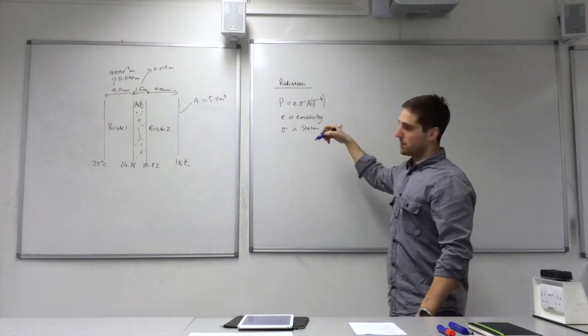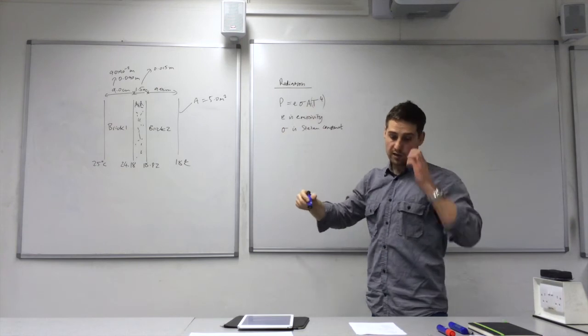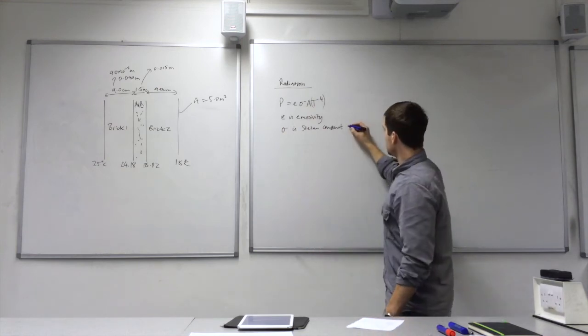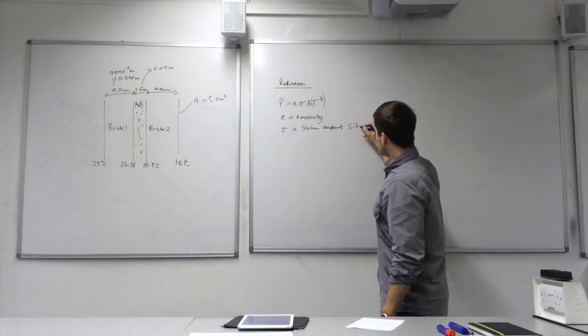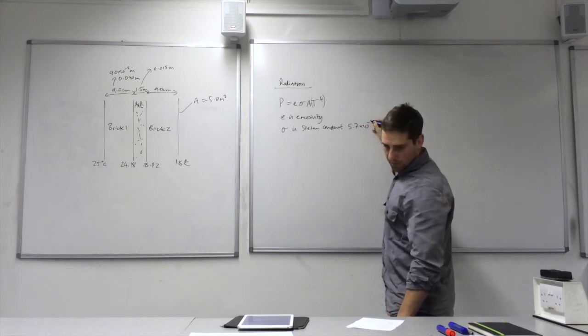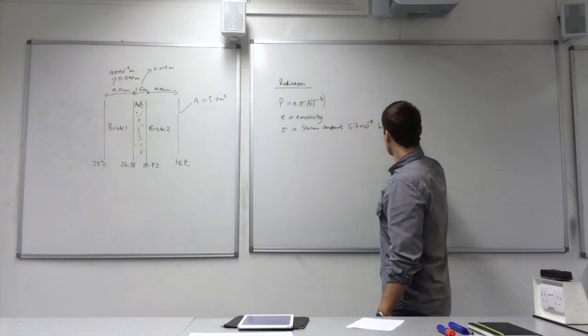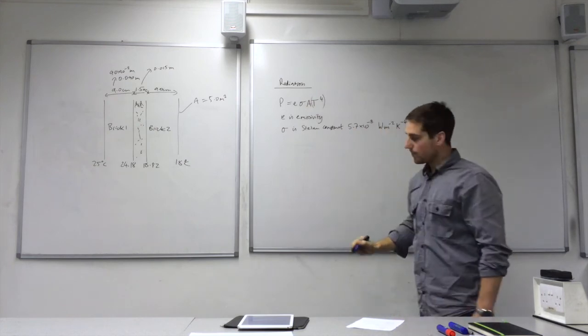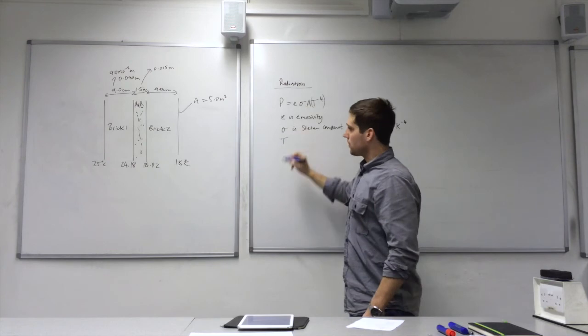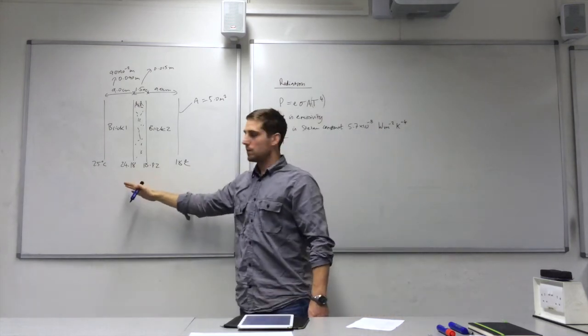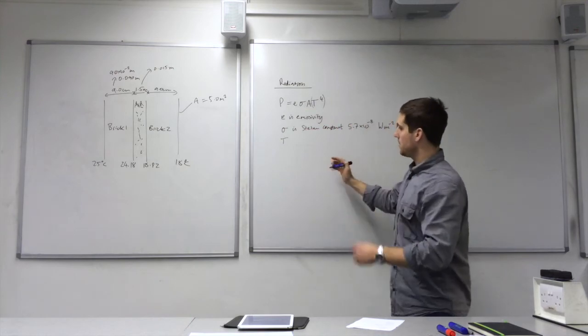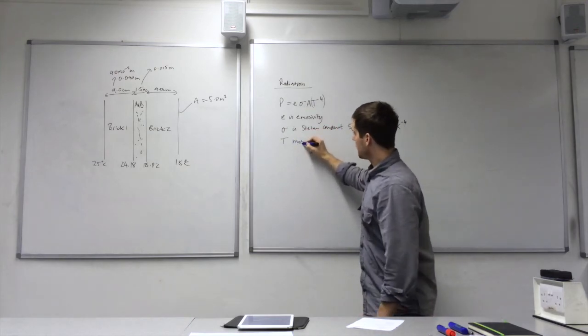Now, it's a constant, so that means it always has the same value, just as pi has a value 3.142. So this is 5.7 times 10 to the minus 8 watts per square meter per Kelvin. And whereas before, when we were calculating these temperature differences, it didn't matter if it's in degrees C or Kelvin, here it must be in Kelvin, the temperature.